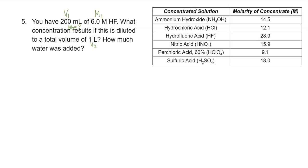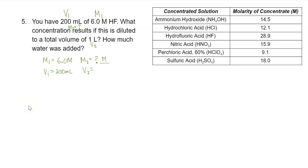Let's go ahead and solve for M2 first. We'll write out our information: M1, V1, M2, and V2. Our V1 is 200 milliliters and our M1 is 6.0 molar. M2 is what we're looking for — units of molarity, capital M. For V2, we have a final volume of one liter, but we need matching units, so we convert: one liter equals 1,000 milliliters.